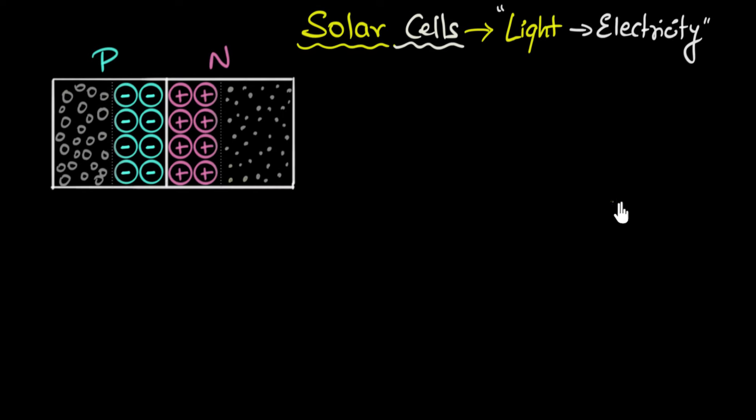Let's explore the VI characteristics of a solar cell. We've already seen that solar cells are p-n junctions that convert light into electricity. When you shine light on a p-n junction, the photons absorbed in the depletion region cause electron-hole pairs to be formed. Before they have time to recombine, electrons get accelerated towards the n side and holes get accelerated towards the p side.